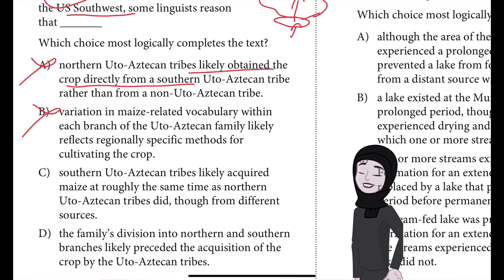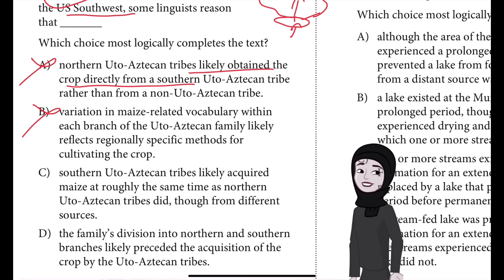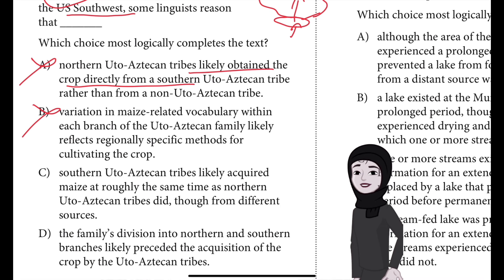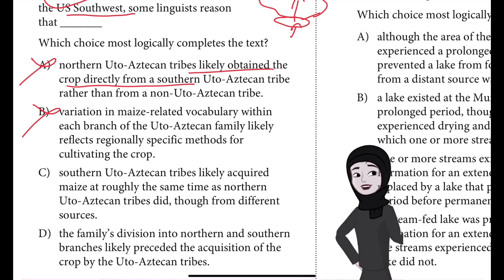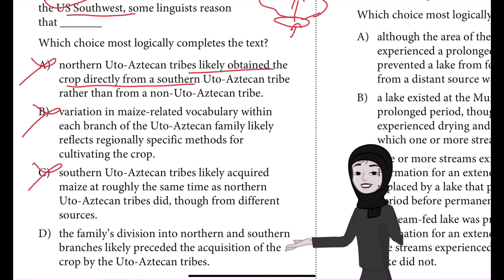B is also incorrect because the text discusses the fact that northern and southern branches don't share vocabulary pertaining to maize — not that there are variations within each branch. The text focuses on differences between the two branches, not on differences between languages within a single branch.